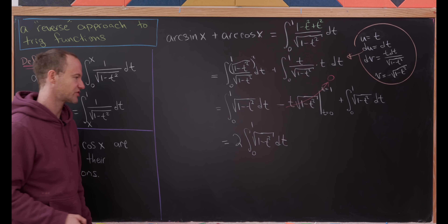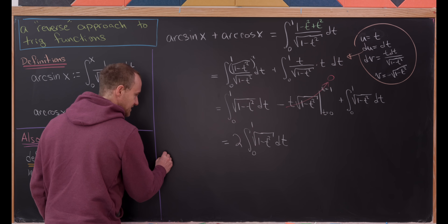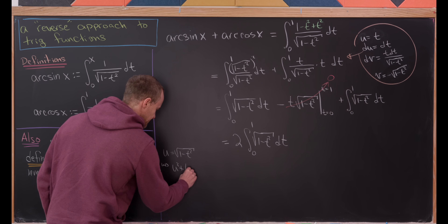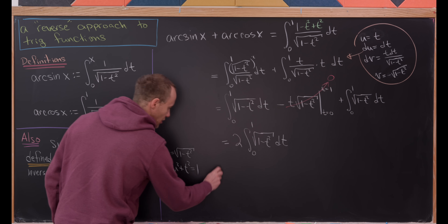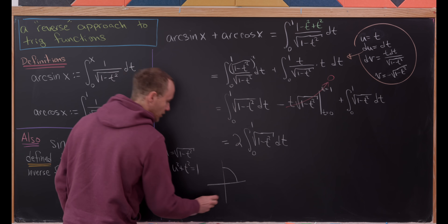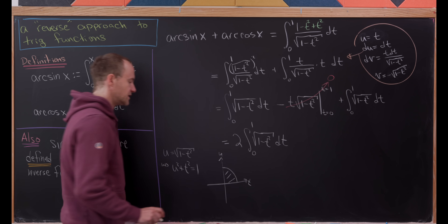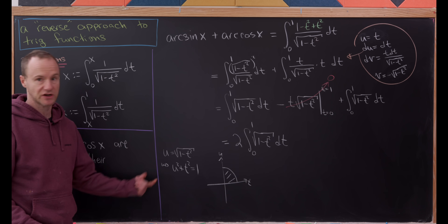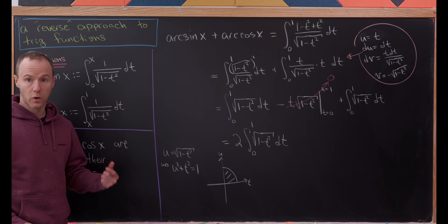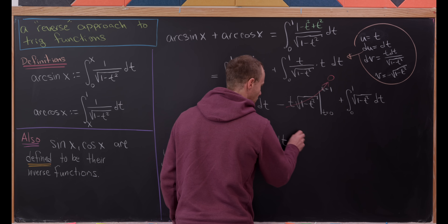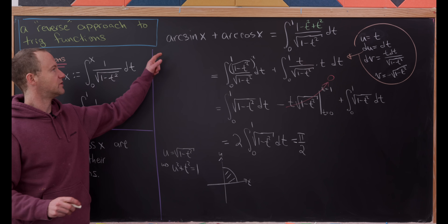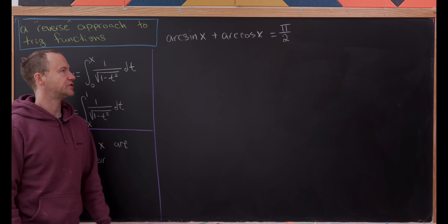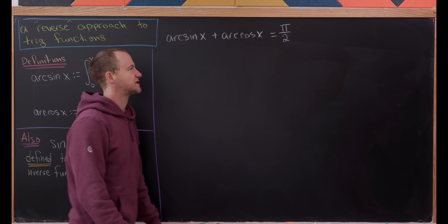We can evaluate that integral by noticing it represents a certain area. If we set u equal to the square root of 1 minus t squared, then u squared plus t squared equals 1 — this function represents a quarter circle in the tu-plane with radius 1. So this integral represents the area of that quarter circle, which is π/4. Multiplying by 2 we get π/2. So we have arc cosine of x plus arc sine of x equals π/2.